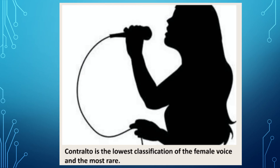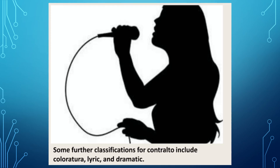Contralto is the lowest classification of female voice and the most rare, because they hit the very low tones of a song. It is very rare because most singers nowadays are what we call biritera — reaching the highest tone of the song. Further classifications for contralto include coloratura, lyric, and dramatic.